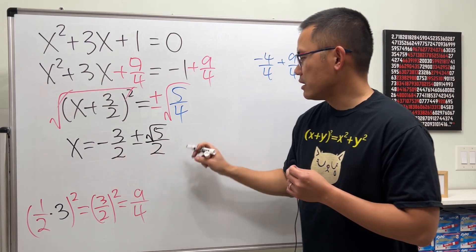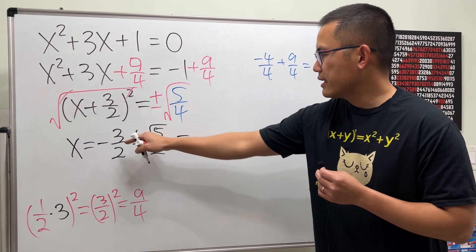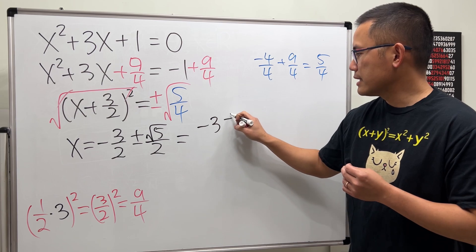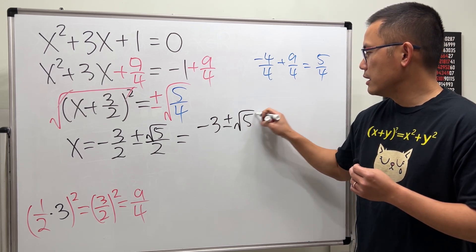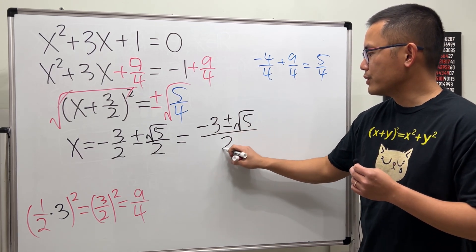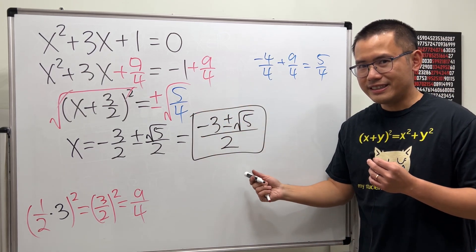If you would like, you can put them together and you can write that as negative 3 plus or minus square root of 5 on the top, all over 2. That's it.